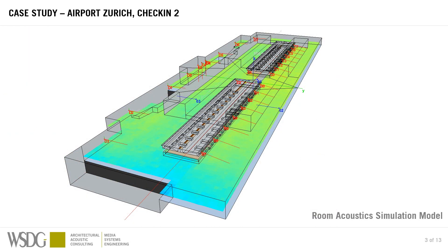In these types of projects we work with acoustical simulation models shown here. This is a three-dimensional representation of the space in question. In the center you see the check-in counters, and those red lines and red dots with the Bs display loudspeakers' positions and orientation. We can simulate the sound field projected by the loudspeakers inside the space.